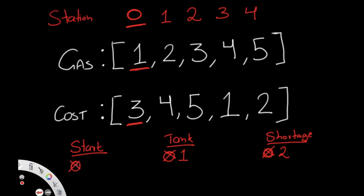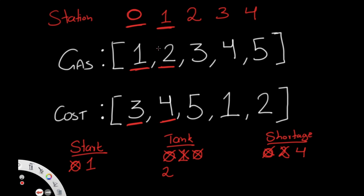At station one, we fill up with two liters of gas. To get to the next station we need four liters, but we don't have four liters. That gives us a shortage of four minus two, which is two more liters needed. We add that to our shortage, giving shortage a new value of four. Starting at station one is not valid either, so we change start to station two and reset our tank to zero.